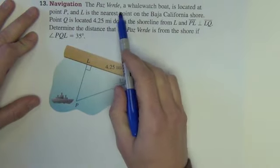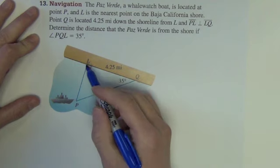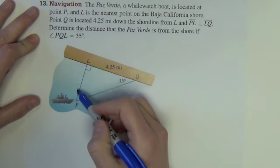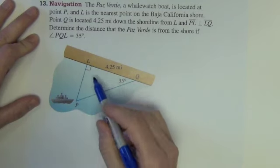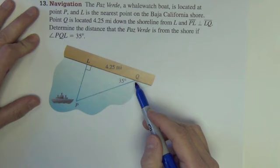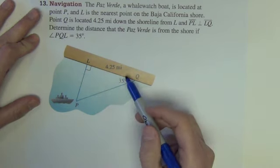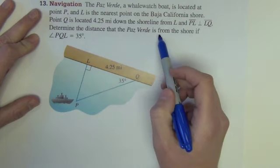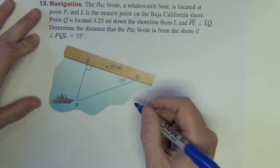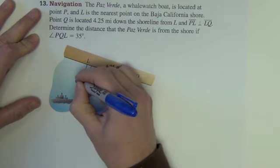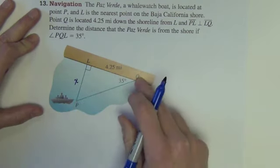Okay, the Paz Verde, a whale watch boat, is located at point P. And L is the nearest point on the Baja California shore. If that's the nearest point that means it makes a right angle there. Point Q is located 4.25 miles down the shoreline from L. And PL is perpendicular to LQ. Determine the distance that the Paz Verde is from the shore if angle PQL is 35 degrees. So determine this distance the boat is to the shore assuming it means the closest distance.